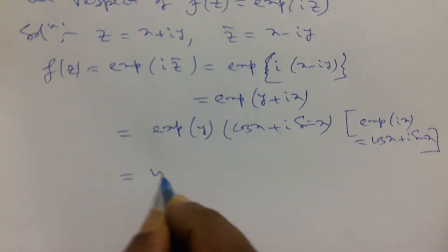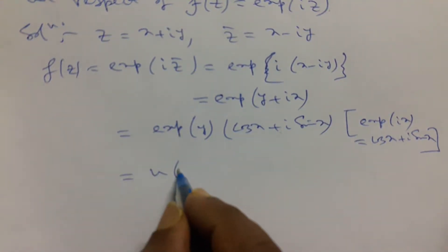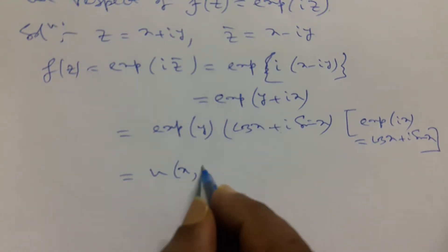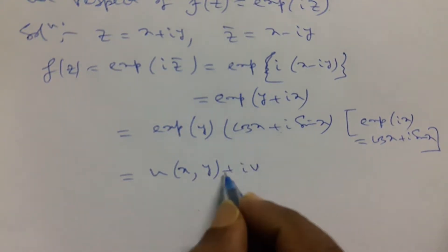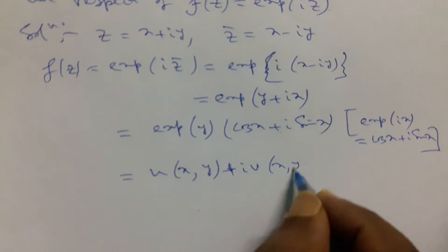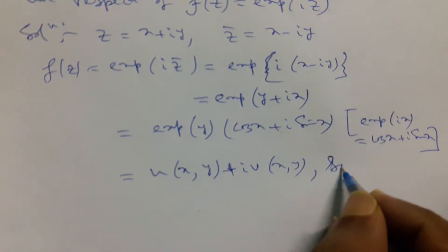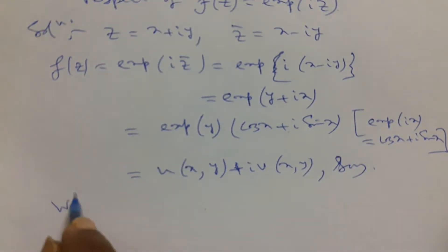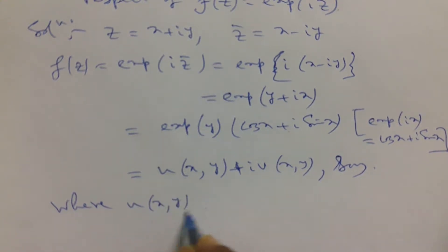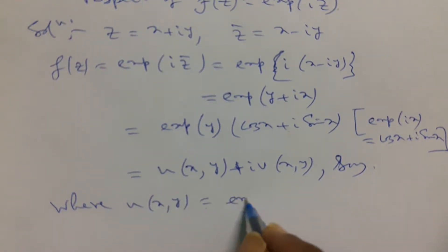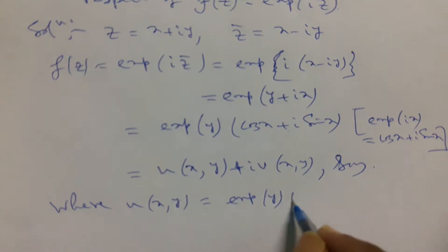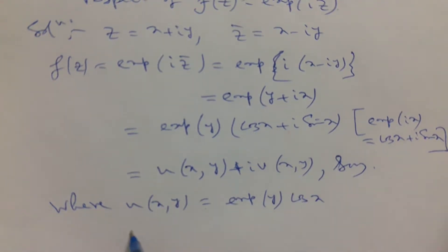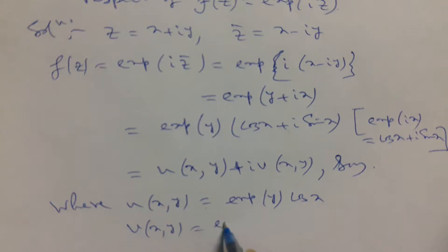So, if we write this in the form u(x, y) plus i v(x, y), then u(x, y) = e^y cos x, and v(x, y) = e^y sin x.